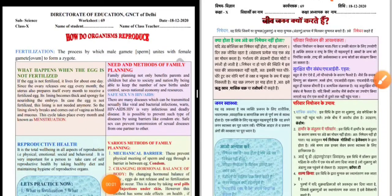Hello students, how are you? Today we are here for doing worksheet number 69 for class 10 science in both mediums. Today's topic is how do organisms reproduce, and in this worksheet we are discussing about fertilization, nishetian, and what are the various methods of family planning, pariwar niyojan ke upai — in sab ke baare mein aaj hum discuss karne waale hain. So let's start.